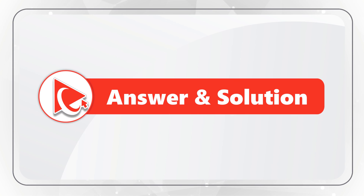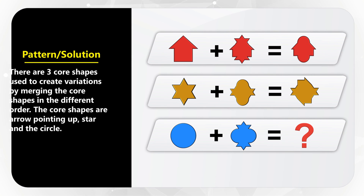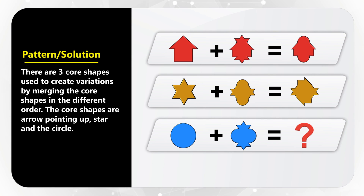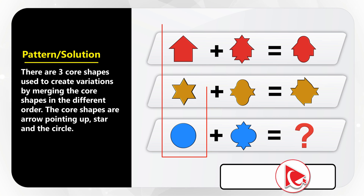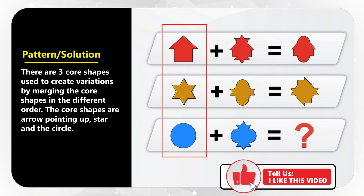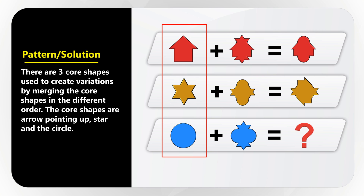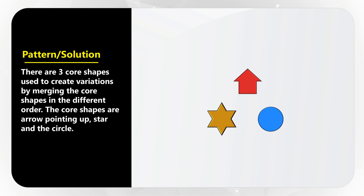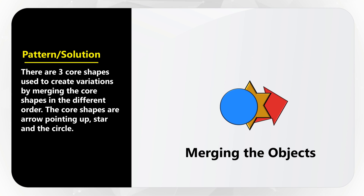To solve any challenge, the key is to find the pattern, and this question is no exception. The pattern here is rather unusual, but it still exists. There are three core shapes represented by objects in the first column: an arrow pointing up, a star, and a circle. All remaining objects are just variations created by merging core objects into another object.